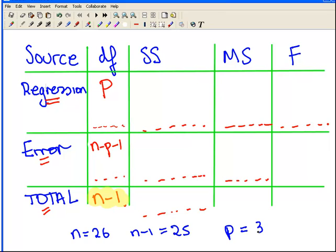P is also 3, there's 3 predictor variables. So the answer to this one is 3. The answer here is 25. And n minus p minus 1 is 26 minus 3 minus 1, and that is equal to 22. So the answer there is those are the degrees of freedom for regression, error, and total.